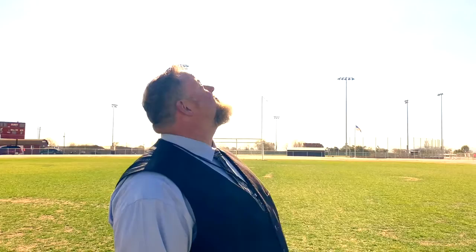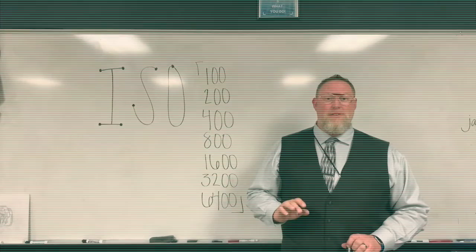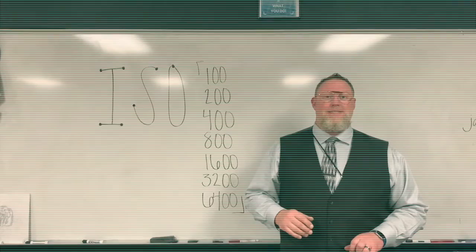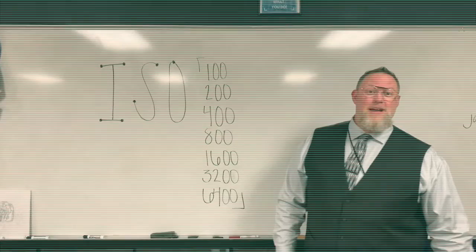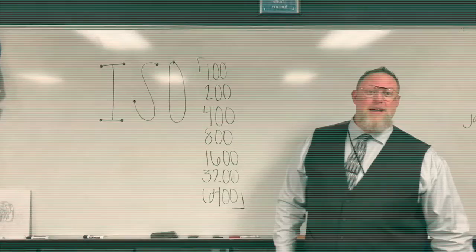ISO has to do with the sensitivity of the sensor in your camera. You usually use settings like this in bright situations like this. But when situations change from super bright to ones like this, you'll want to change your ISO setting. A stop in photography is a measurement of light that either doubles or halves the amount of light in your images. When you adjust your ISO from 100 to 200, you are doubling the sensitivity of the sensor. The measurements go 100, 200, 400, 800.